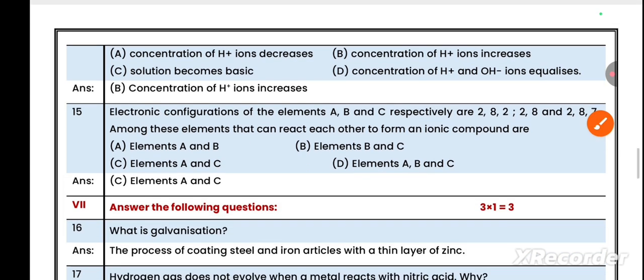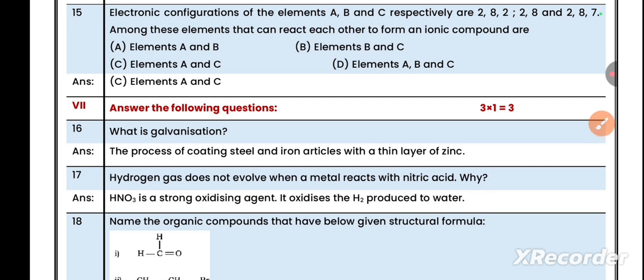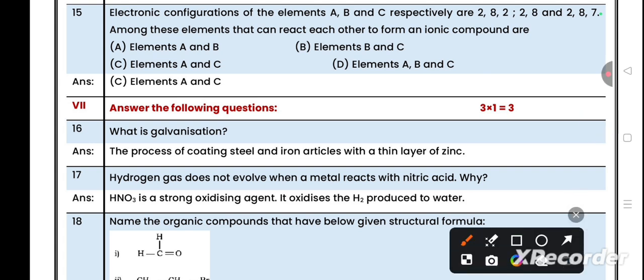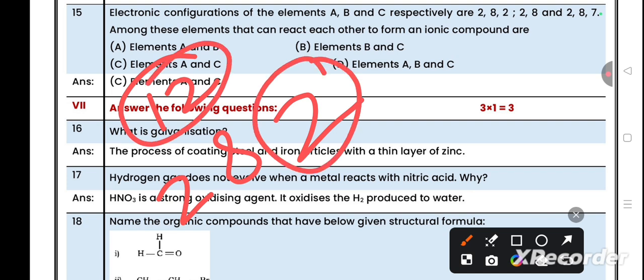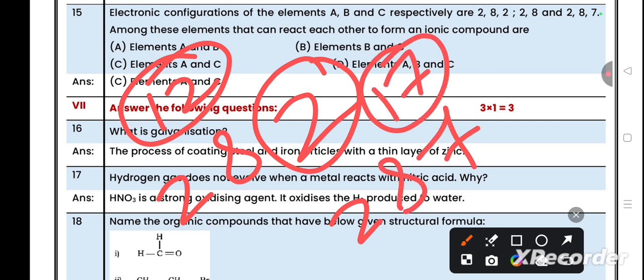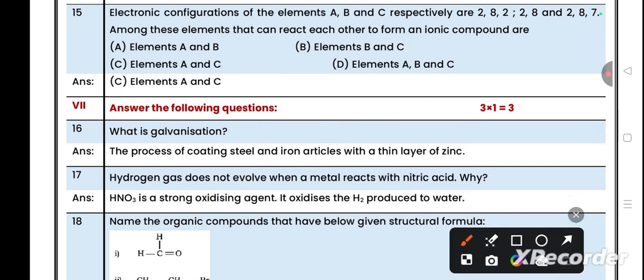Question number 15: Electronic configuration of elements A, B, and C respectively are 2,8,2; 2,8; and 2,8,7. Among these elements that can react with each other to form an ionic compound - ionic compounds are formed when metals and non-metals react. Here the metal is magnesium (2,8,2), atomic number 12. It is capable of donating two electrons. And 2,8,7 is chlorine, atomic number 17.